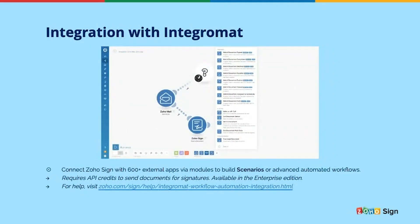We introduced an integration with Integromat, one of the integration platforms-as-a-service applications allowing you to connect multiple web applications to build automated smart workflows. You can connect modules of different applications by selecting triggers and actions and setting conditions. Zoho Sign currently has an extensive module list inside Integromat, allowing you to connect it with over 600 different applications to build automated workflows for advanced use cases. Note that this requires API credits to send documents as it is a third-party integration.